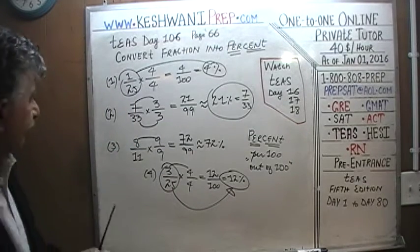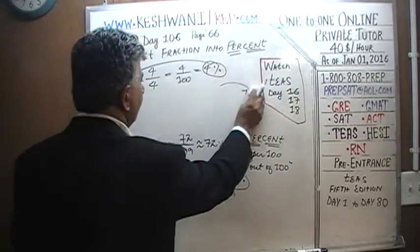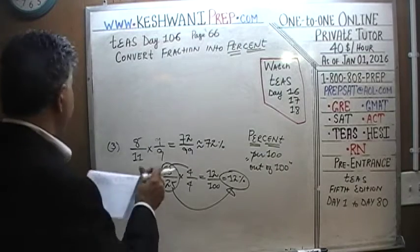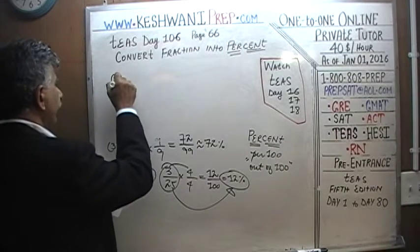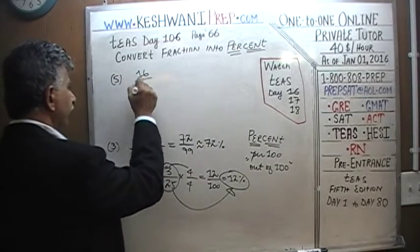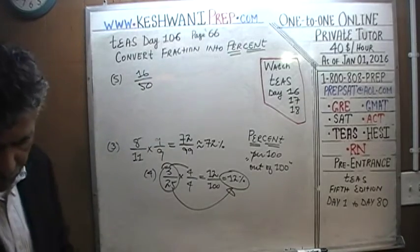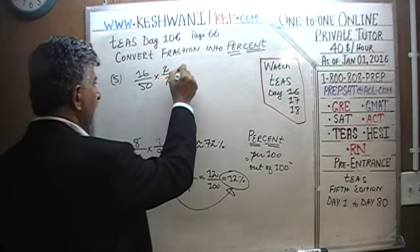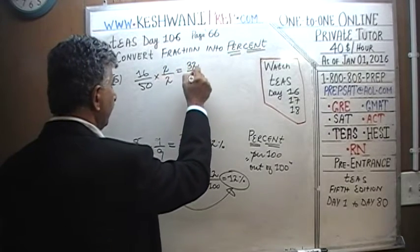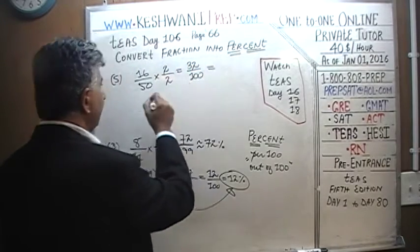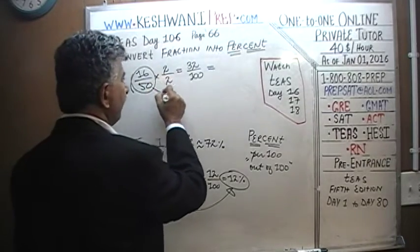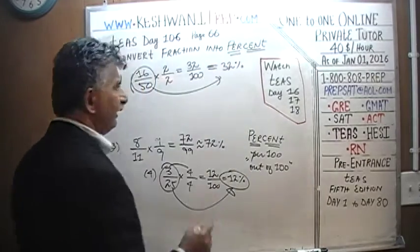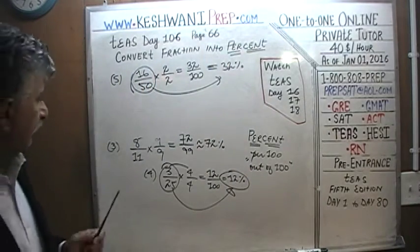Number five: sixteen over fifty. That's also very easy. We can convert fifty into a hundred by multiplying top and bottom by two. Sixteen times two becomes thirty-two, giving thirty-two over one hundred. Sixteen out of fifty is exactly thirty-two percent — not approximately, exactly thirty-two percent.